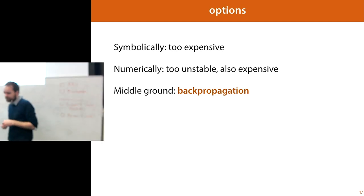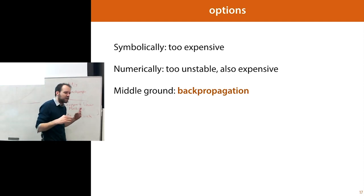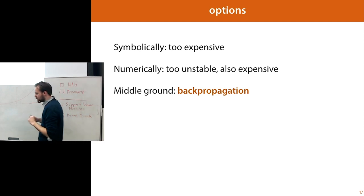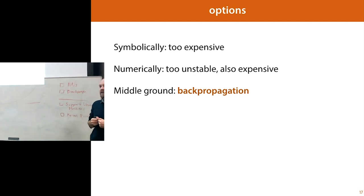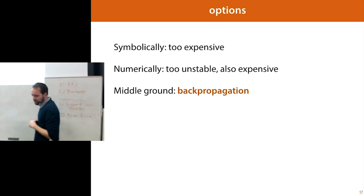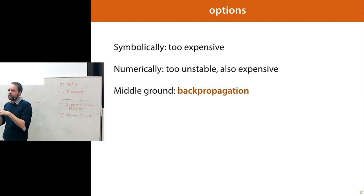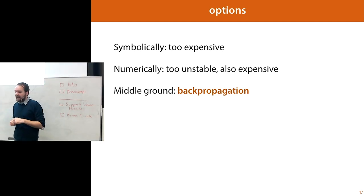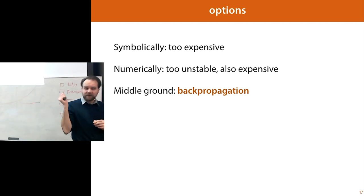We can also do numeric differentiation: take two points very near each other, compute the value of the function, fit a line through them and look at the slope. If the original points are close enough, that works. But it's also expensive — the bigger your space, the more dimensions, the more expensive it gets — and it's quite unstable, so you're not sure you're getting an exact answer. We rule that one out as well.